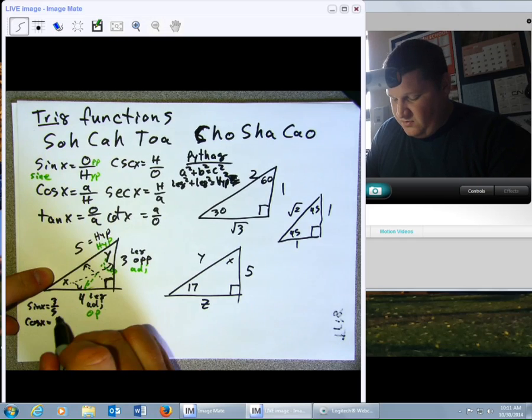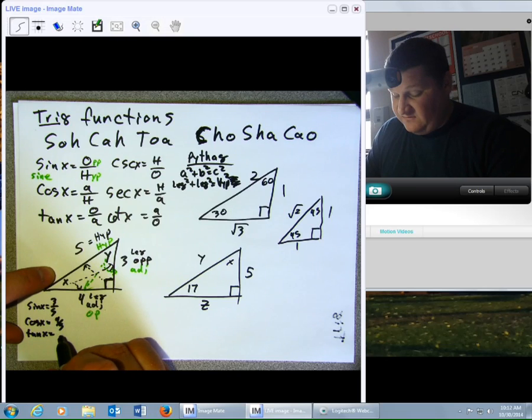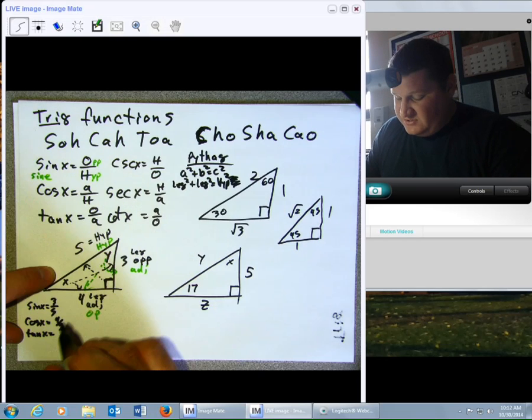Tangent of X, you'll notice I always have to put the X, I can't just put tangent, it has to be tangent of something. Tangent of what? In this case, X. Opposite over adjacent, 3 over 4.